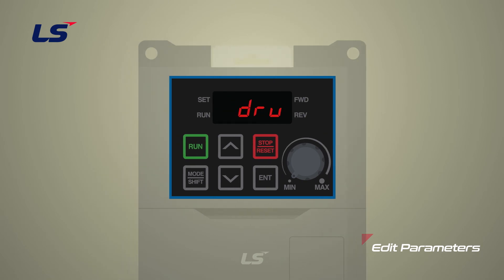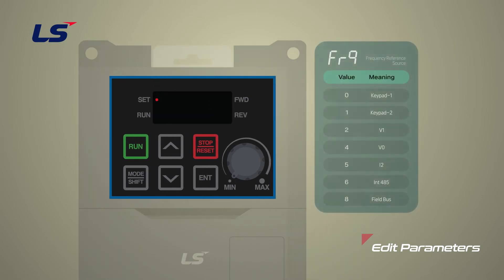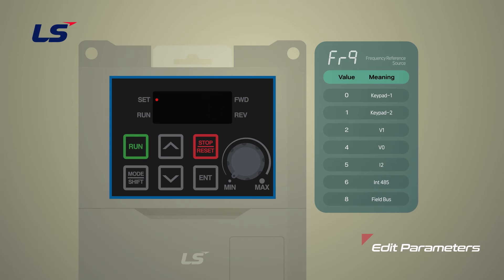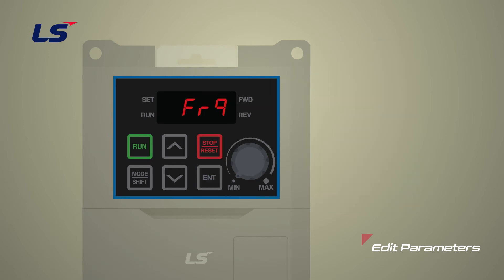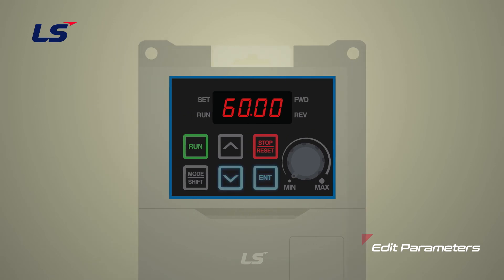Next, move to the frequency parameter by pressing the up arrow key once to edit the frequency reference source. Press the enter key to confirm the value. When entering the edit screen, the previously set value blinks. Here, the meanings of numbers are as shown in the table on the screen. That is, if it is 0, it means that it is set to keypad 1, and it means you can set the frequency by the keypad on the initial screen. We will not change this parameter. You can return to the initial screen at once by pressing any two keys at the same time after pressing the enter key to exit.